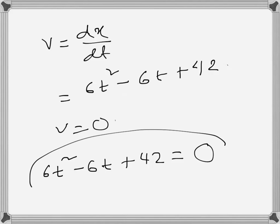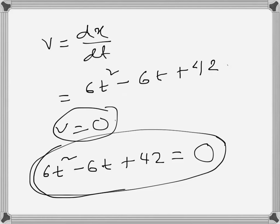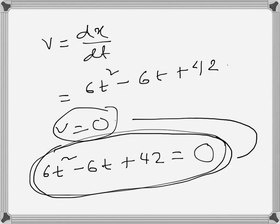For the particle to be at rest, there has to be a t for which this velocity equation equals 0. To prove the particle is never at rest means the velocity is never 0, which means this equation has no real root. If we can prove this equation has no real root, we prove that v is never 0.